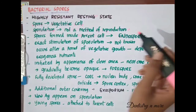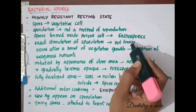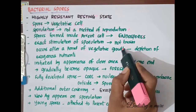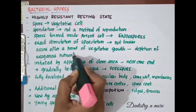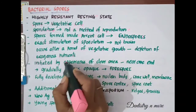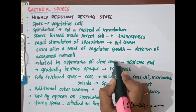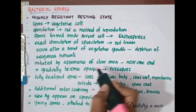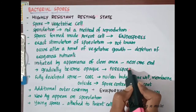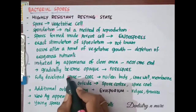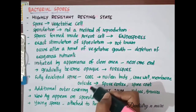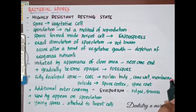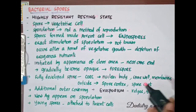While the exact stimulus of sporulation is unknown, it occurs after a period of vegetative growth, usually due to the depletion of exogenous nutrients. Sporulation is initiated by the appearance of a clear area, usually seen near one end, which gradually becomes more opaque. This stage is called the forespore. The fully developed spore has a core, and the core contains the nuclear body, spore wall, and membrane.